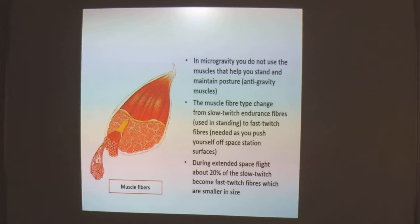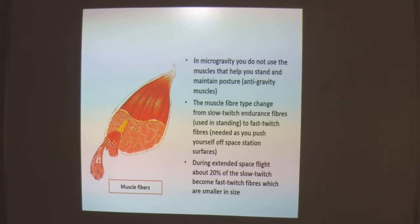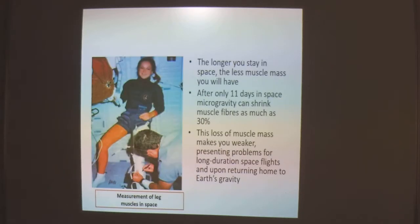In microgravity, you do not use muscles that help you stand and maintain posture — the anti-gravity muscles. So the muscle fiber type changes from slow-twitch endurance fibers, which are used in standing, to fast-twitch fibers, which are needed to push yourself off the space station surface. During extended space flight, about 20% of slow-twitch fibers become fast-twitch fibers, which are smaller in size. The longer you stay in space, the less muscle mass you will have.